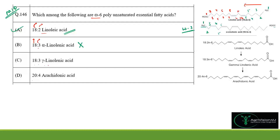Gamma-linolenic acid (18:3) has three double bonds at positions 6, 9, and 12. Numbering from the methyl end, the first double bond is at position 6, making it an omega-6 fatty acid. Therefore option C is correct.